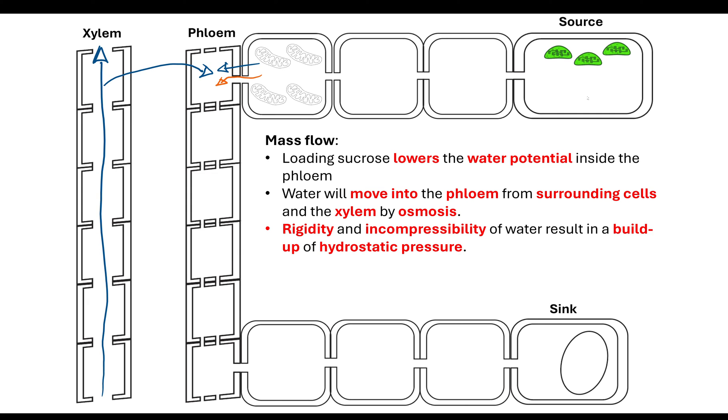We know that water is incompressible and this is going to result in a buildup of hydrostatic pressure. That buildup of hydrostatic pressure will push the water, and water will flow from an area of high hydrostatic pressure to an area of lower hydrostatic pressure. That can be bi-directional—it can go down and up within the phloem.